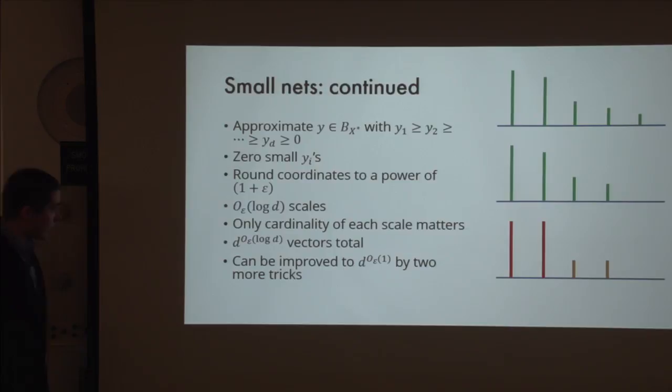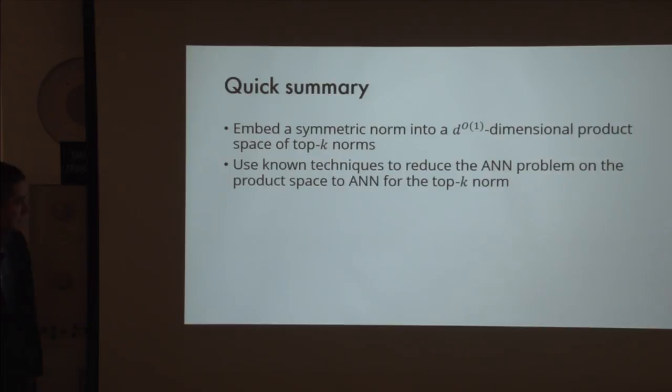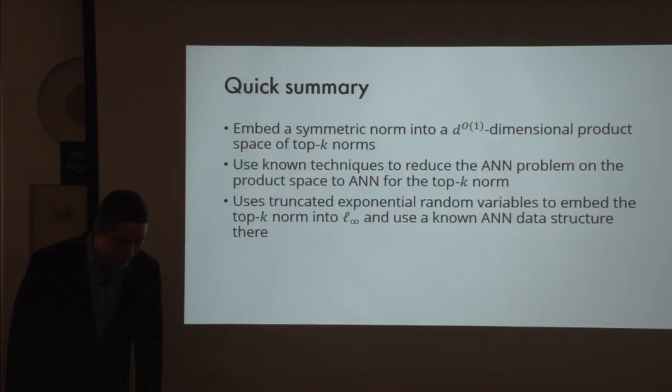Quick summary: first, we showed how to embed a symmetric norm into poly-D dimensional product space of top-K norms. Then we used known techniques to reduce the ANN problem on the product space to ANN for top-K norms. Then we used truncated exponential random variables to embed top-K norm into L-infinity and used known data structures for L-infinity.